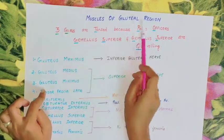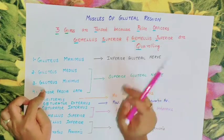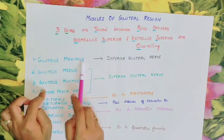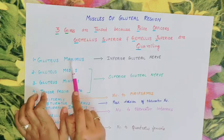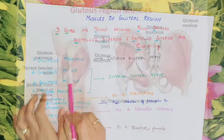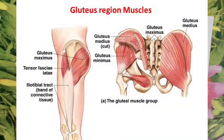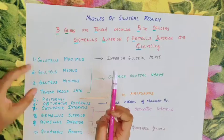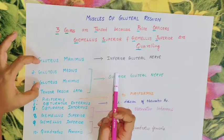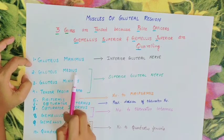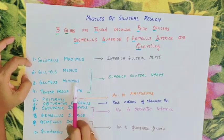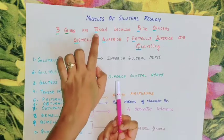G.F.D. — Three girls. In the gluteal region there are three muscles: Gluteus Maximus, Gluteus Medius, and Gluteus Minimus. Gluteus Maximus is large, Gluteus Medius is medium size, and Gluteus Minimus is small. These are the three muscles — Gluteus Maximus, Gluteus Medius, and Gluteus Minimus — the tensed girls.